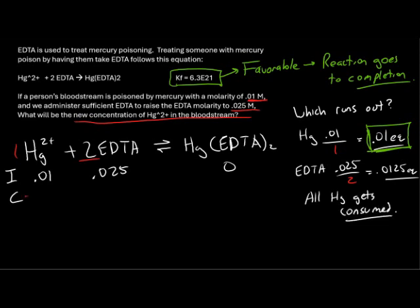Therefore, we'll lose 0.01 of mercury, and for the EDTA, we'll lose twice as much because of the coefficient of 2, and lose 0.02. We will gain an equivalent amount of mercury complex, that's plus 0.01, again, because we have a coefficient of 1 in front of it.